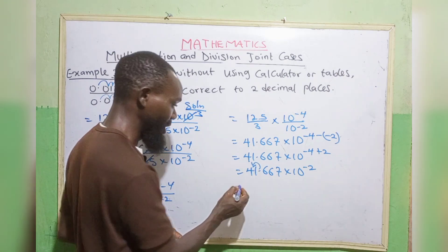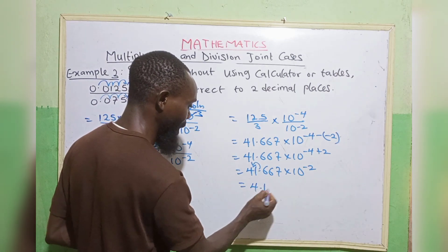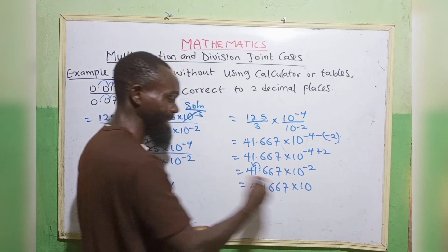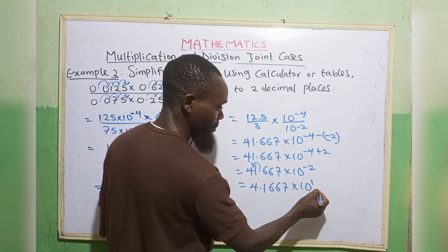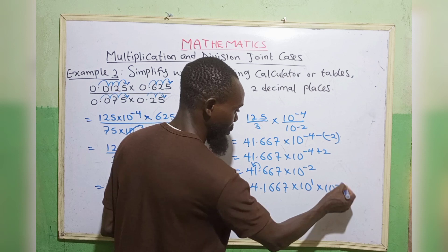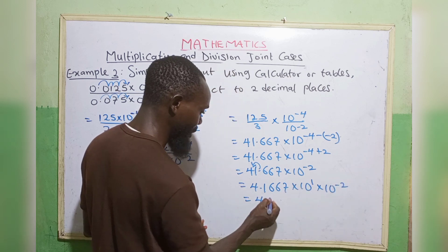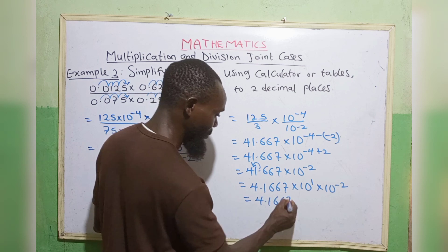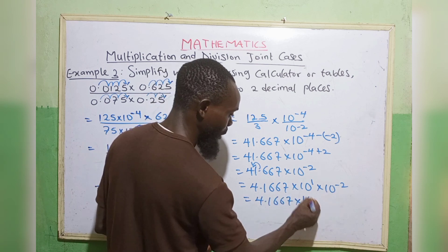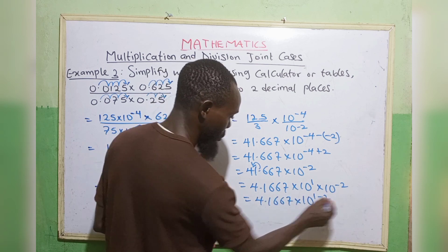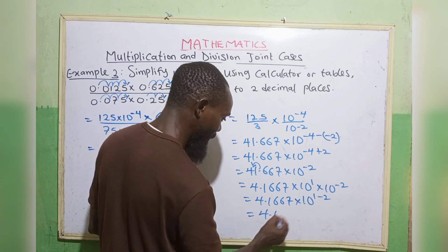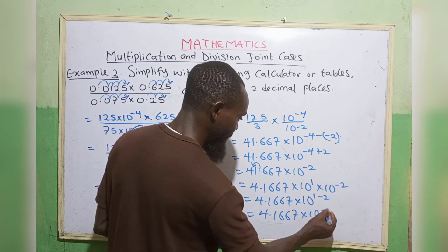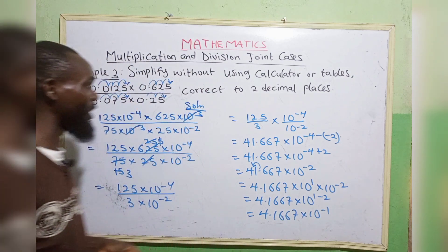Now we move the decimal point to behind the first digit number. So we have 4.1667 times 10 to the power 1 — moving forward, that is positive 1 — times 10 to the power minus 2. So we have 4.1667 times 10 to the power 1 minus 2, that is 4.1667 times 10 to the power minus 1. This is the final answer.